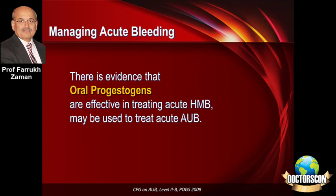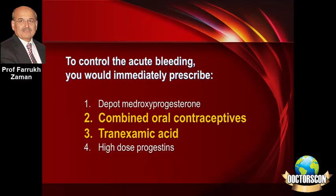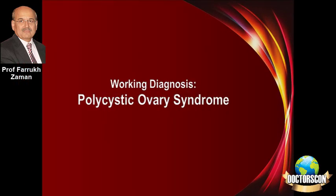There is growing opinion about the use of progestogens, which have been shown to be quite effective in treating heavy menstrual bleeding and can also be used in acute episodes of abnormal uterine bleeding. So in this patient, out of those four options, combined oral contraceptive pill would be a good choice, and to control the episode of excessive bleeding, tranexamic acid should be given, whereas high doses of progesterone can also be utilized.